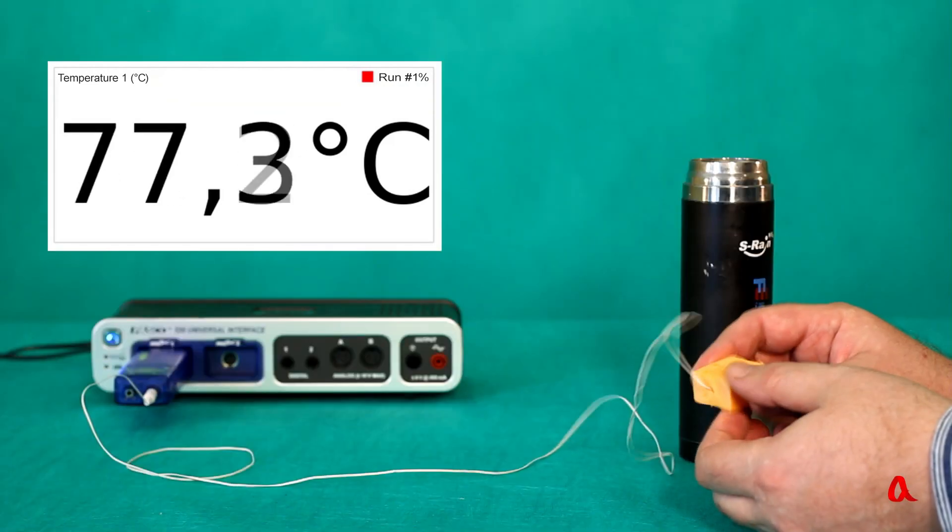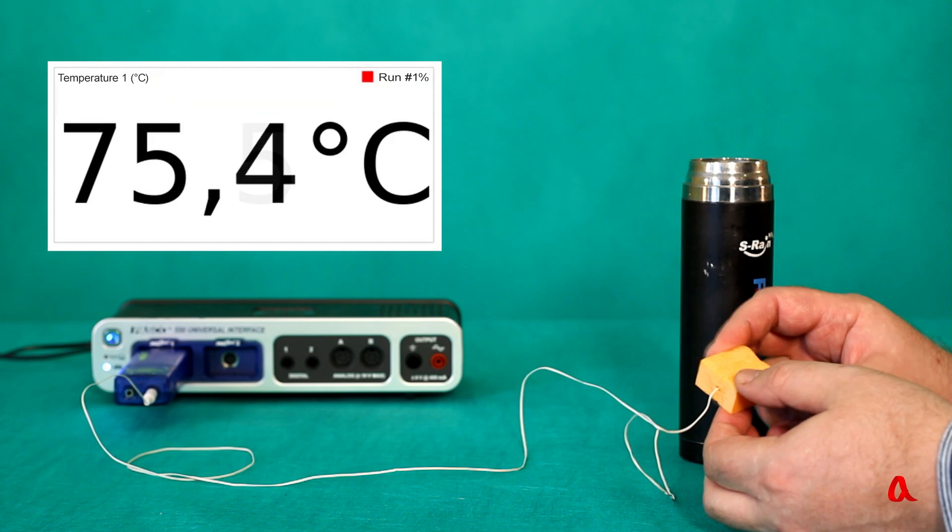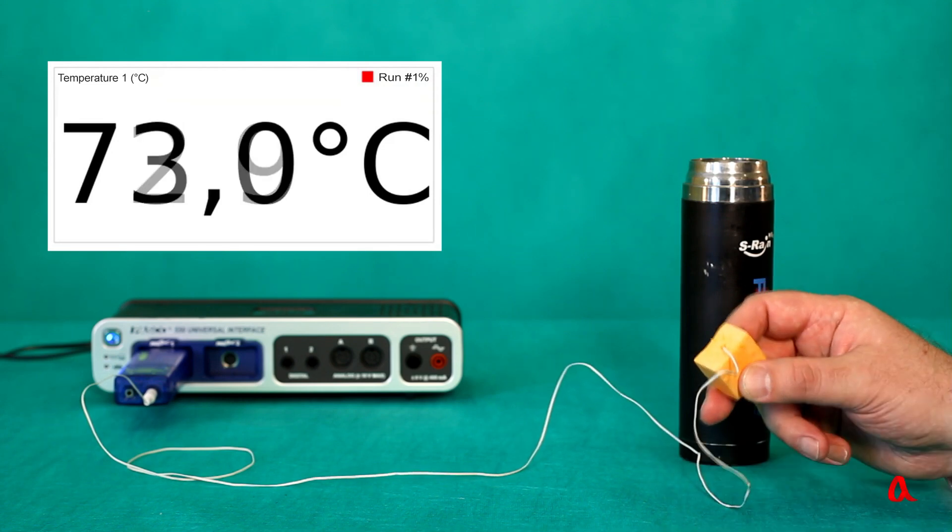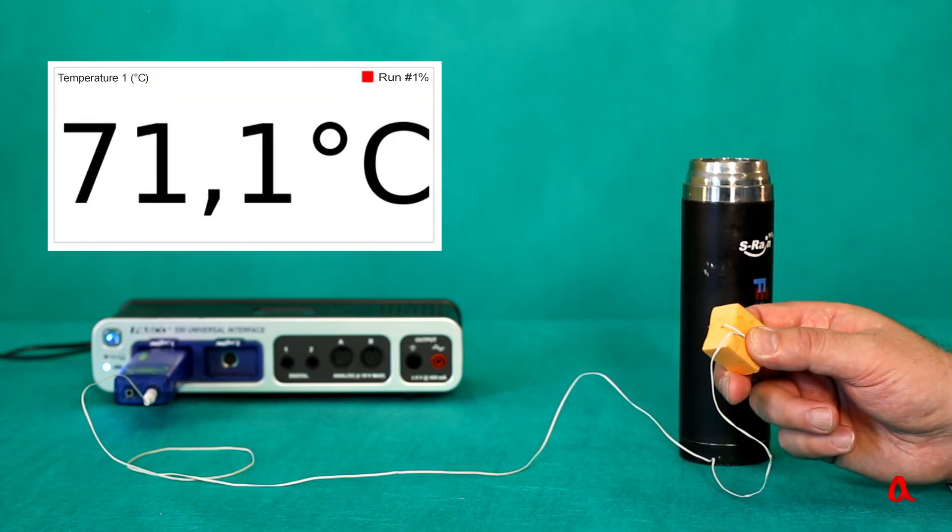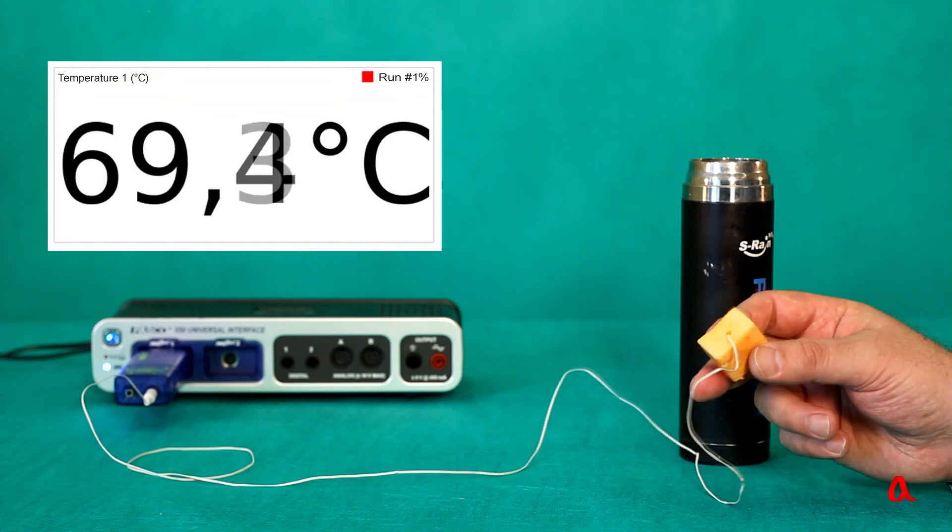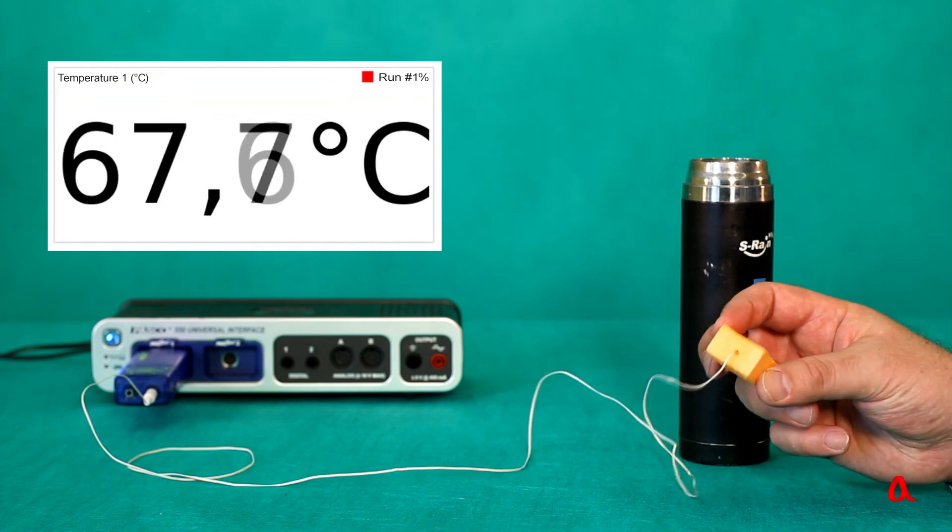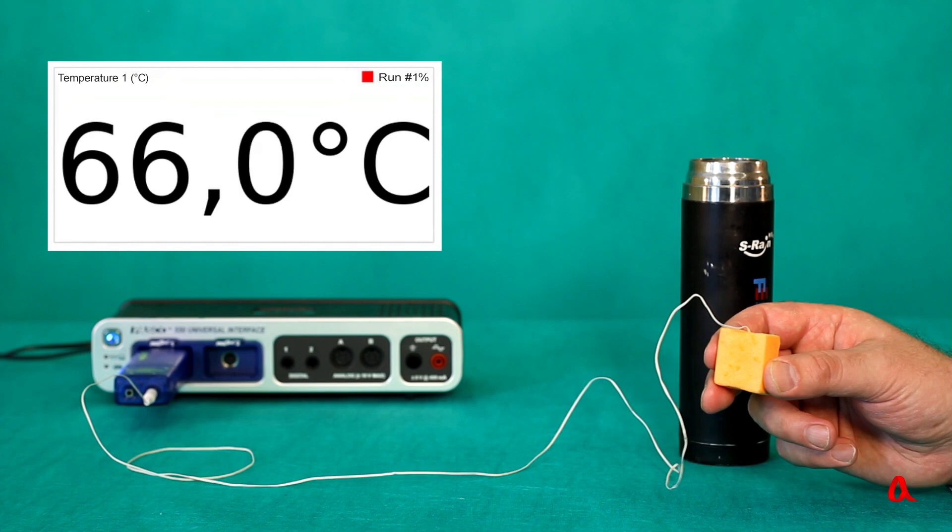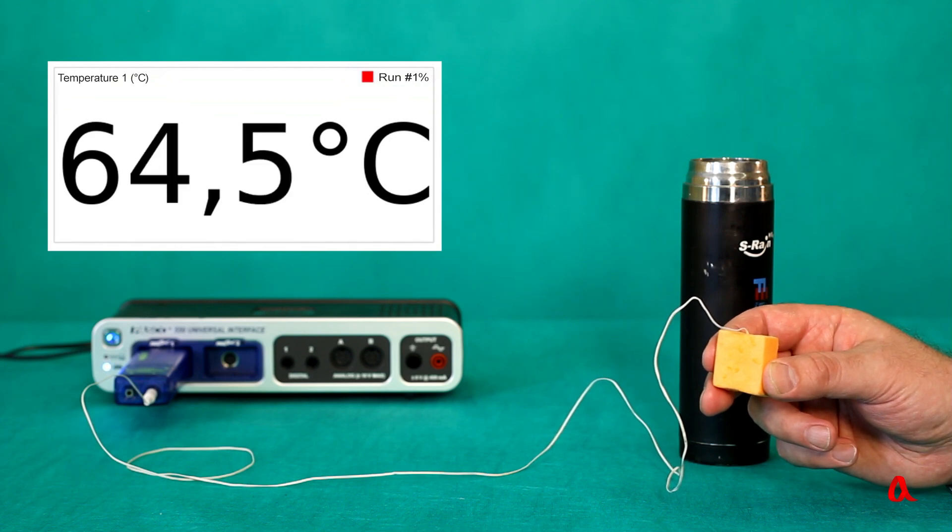The difference can be explained by the fact that Panoplex has very low specific thermal capacity. Even though it's hot, its thermal energy reserve is small. Besides, it has very low thermal conductivity, so heat passes into the hand really slowly.